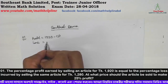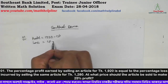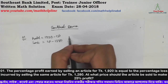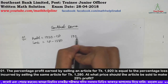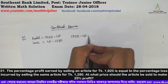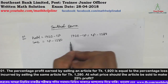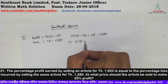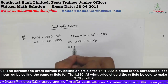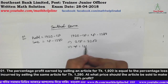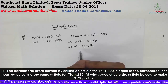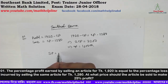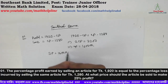Let our cost price be CP. If we sell at 1920, profit occurs; if we sell at 1280, loss occurs. The problem states that the profit percentage equals the loss percentage, so we set up the equation accordingly.